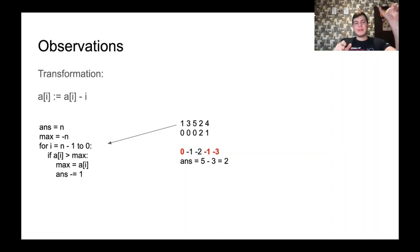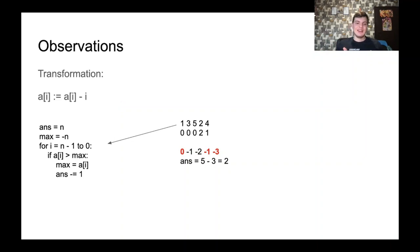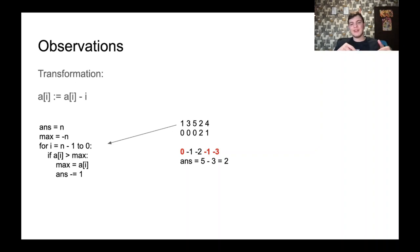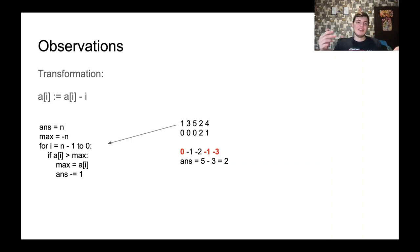The intuition is that if we do all the subtractions in the beginning — applying the a[i] - i transformation before all queries — then someone won't cut in only if their value is greater than all values in its suffix. So someone didn't cut in the line if their value is strictly greater than all values after it in the transformed array. It's a bit hard to wrap your head around but it's a pretty cool trick.